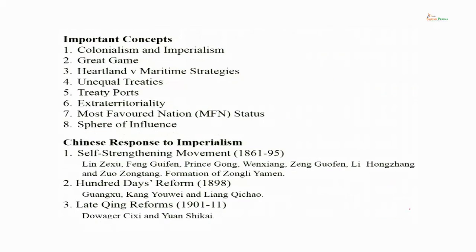China does not recognize the boundary between India and China because China does not accept the validity of the Shimla Convention. Although the Chinese representative had initialed the treaty, it was not ratified by the Chinese government. Every treaty has to be ratified by the government; that was not done, and therefore China is not a signatory — only the government of Tibet and the British Indian government were signatories. Let us now look at some concepts we have discussed so far. The first is colonialism and imperialism.